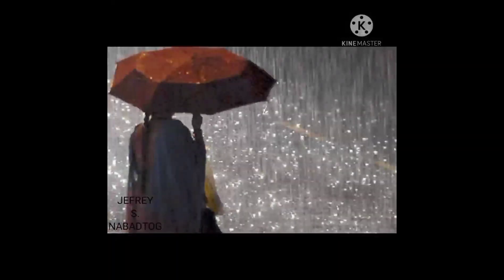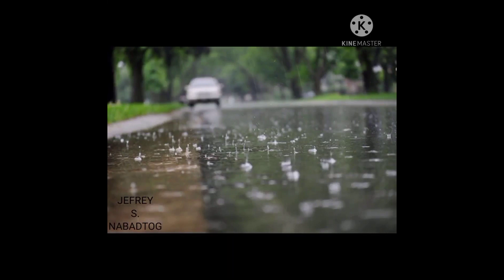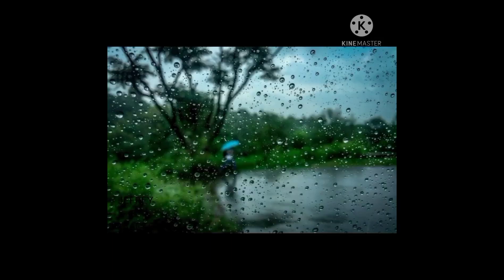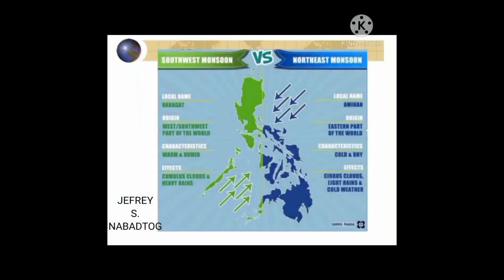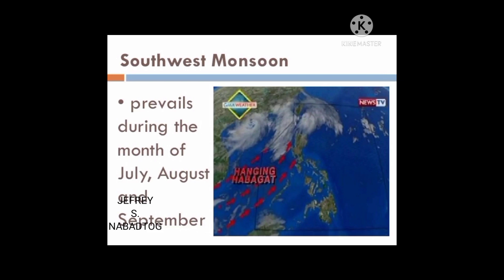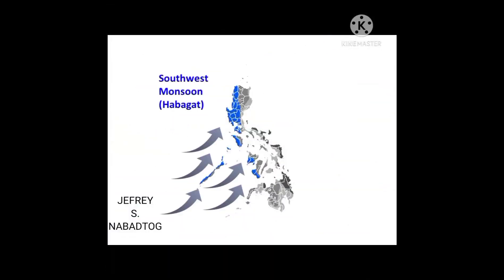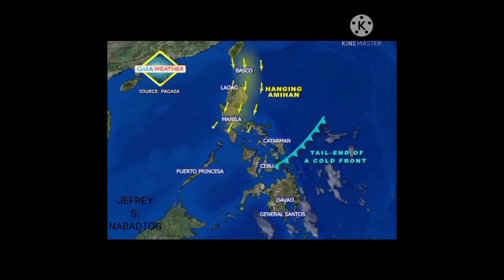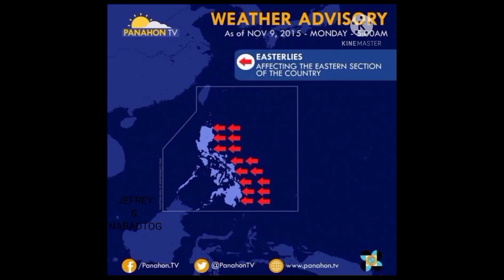Monsoon rainfall is the lifeblood of more than half the world's population for whom agriculture is the source of livelihood. Extensive research is being conducted to increase our understanding of monsoon predictability, with potential to provide significant socioeconomic returns. The Philippines experiences two types of monsoon winds: the Southwest Monsoon and the Northeast Monsoon. The Southwest Monsoon affects the country from late July to September, and the Habagat season brings frequent rainfall, high humidity, flash floods, and landslides.